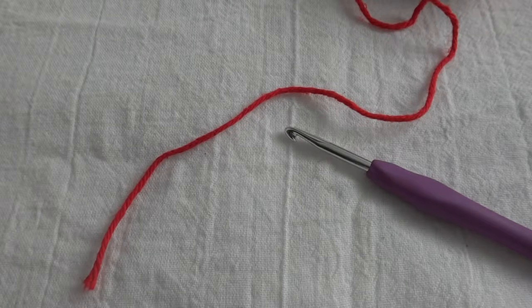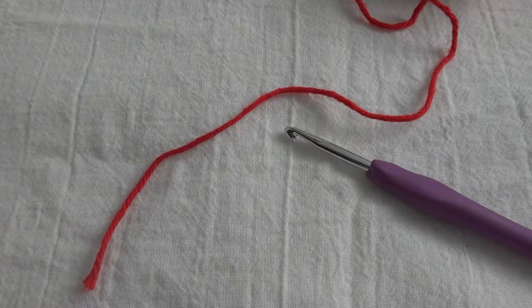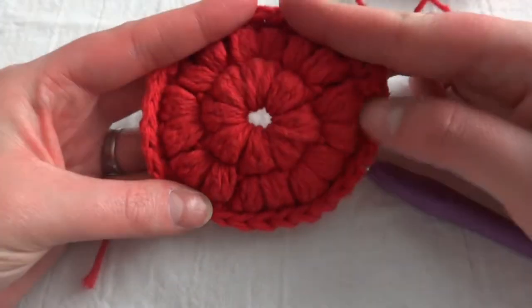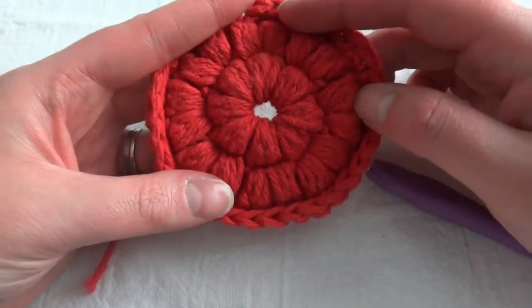Hi it's Alex from You Should Craft and today we're going to learn how to make a magic ring or a magic loop. This is a really flexible way to start a lot of different crochet projects that are in the round.